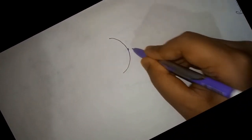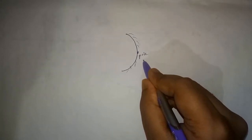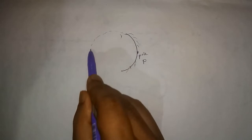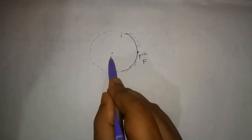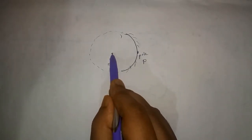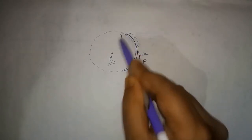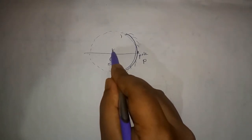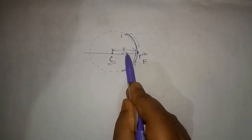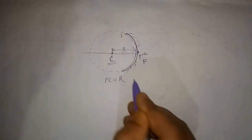The center of the reflecting surface of a spherical mirror is a point called the pole. It lies on the surface of the mirror and is represented by the letter P. The reflecting surface of a spherical mirror forms a part of a sphere. The center of that sphere is called the center of curvature of the spherical mirror, represented by the letter C. Note that the center of curvature is not a part of the mirror — it lies outside the reflecting surface. The radius of the sphere is called the radius of curvature, represented by R, and the distance PC equals the radius of curvature.